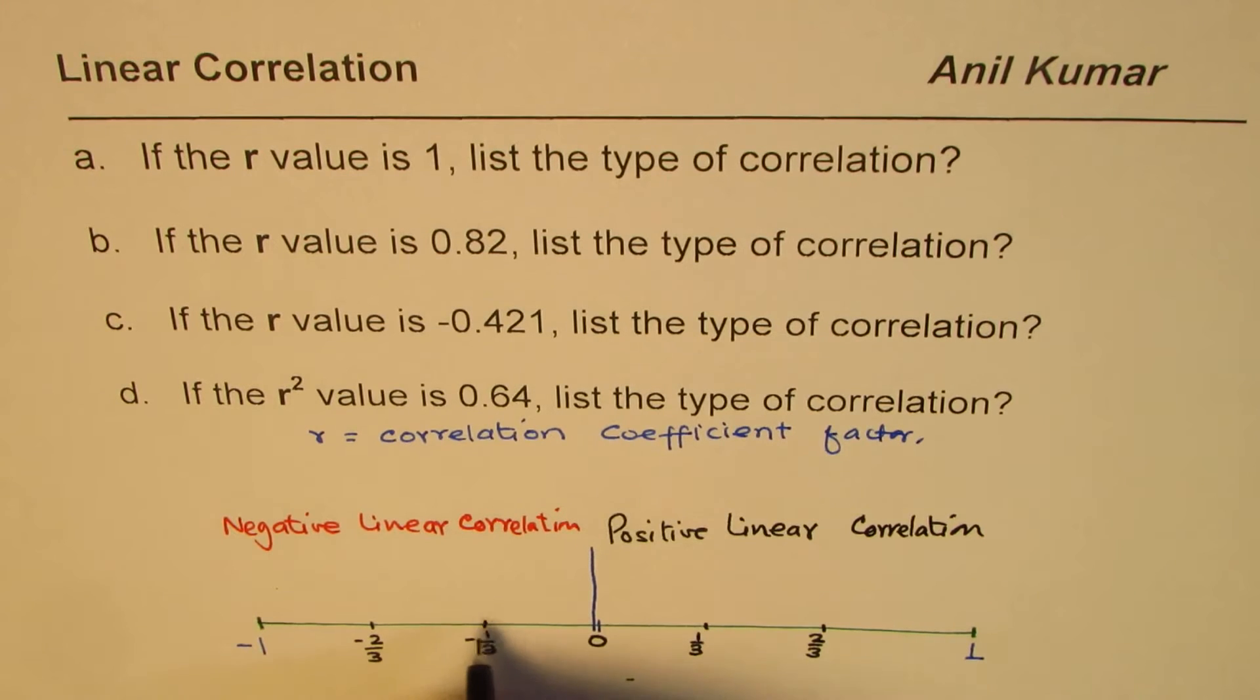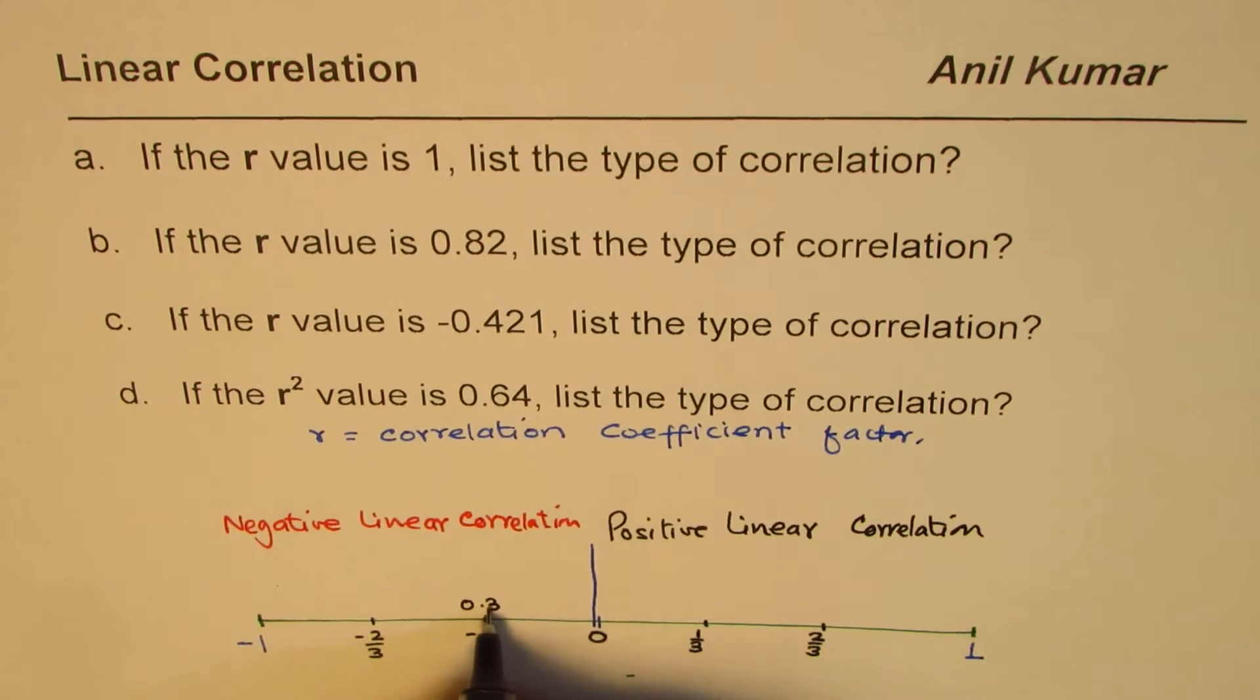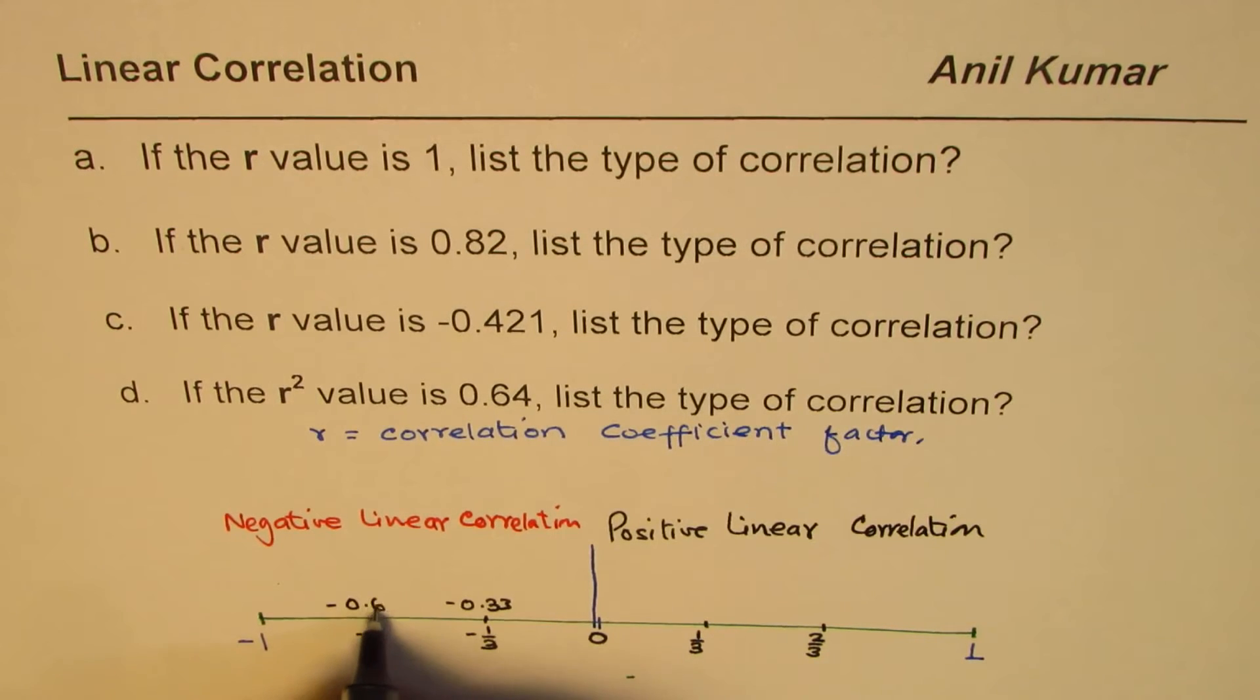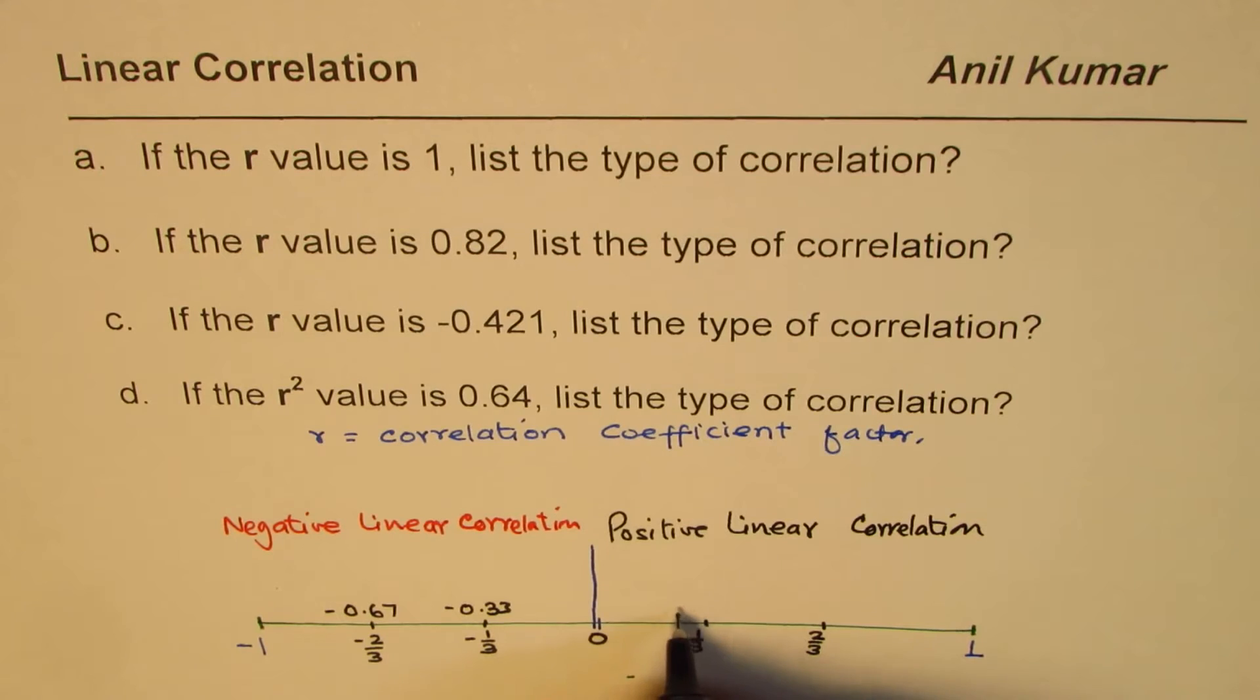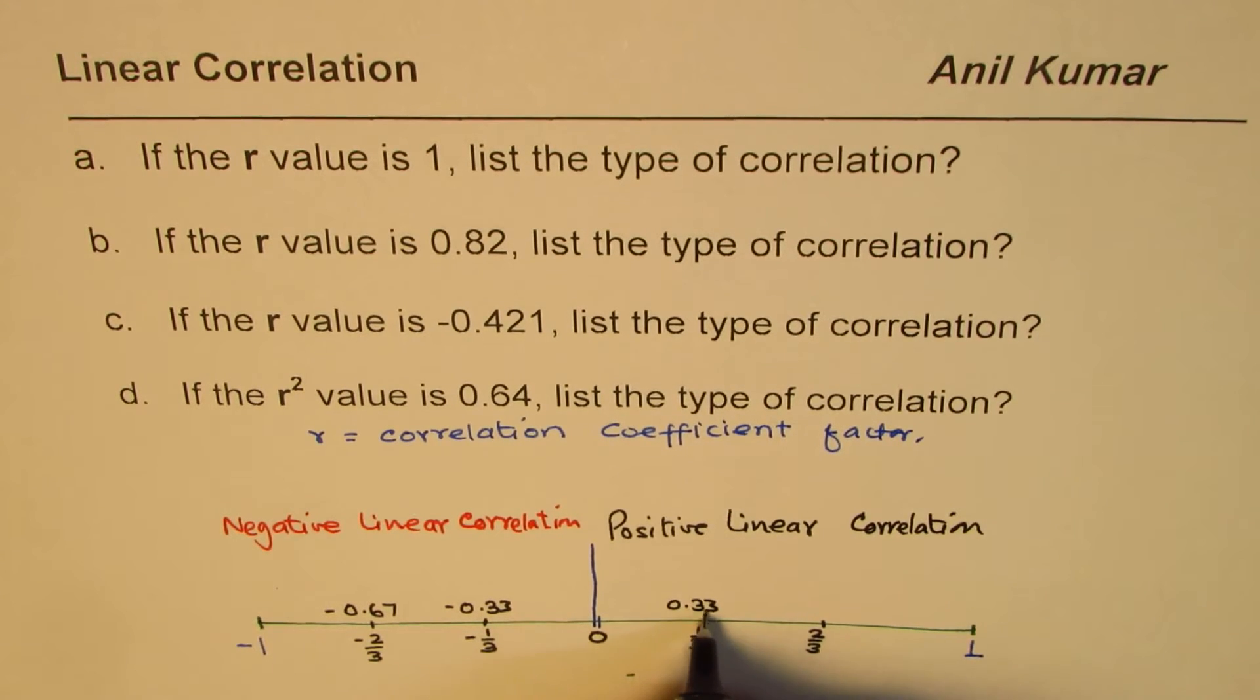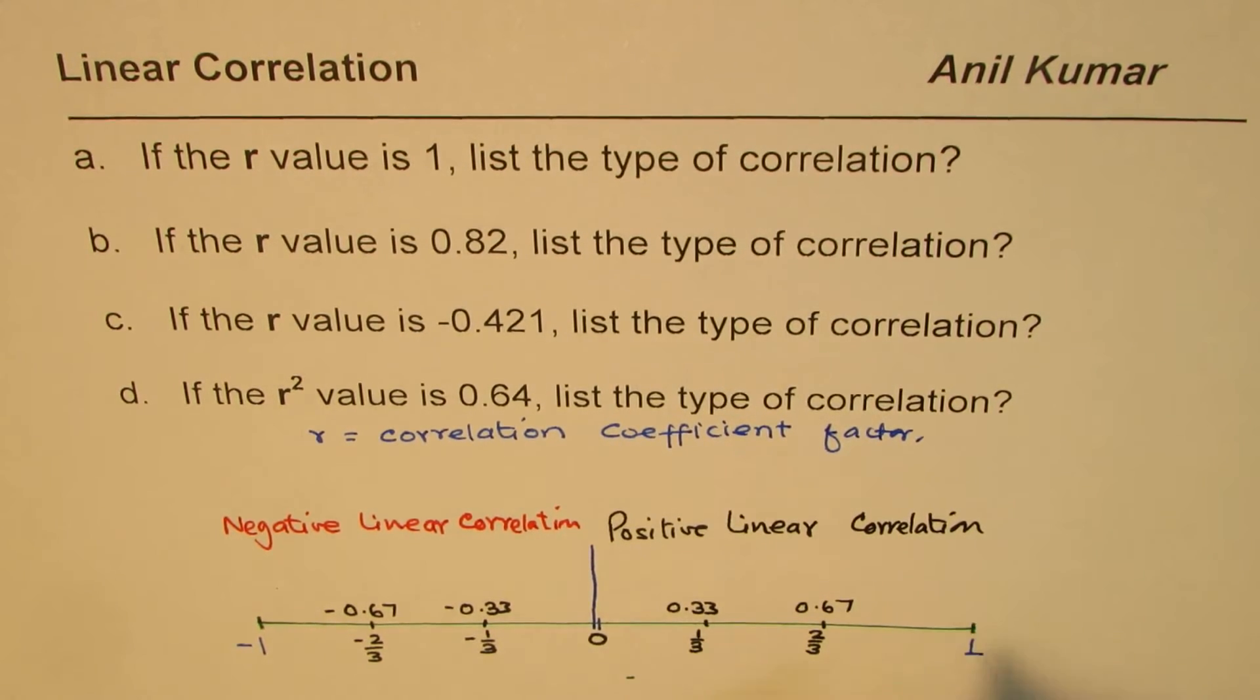In decimals, you can write this value as 0.33. This is negative 0.67. This is 1 negative. And on this side, 0.33 and 0.67 and 1.